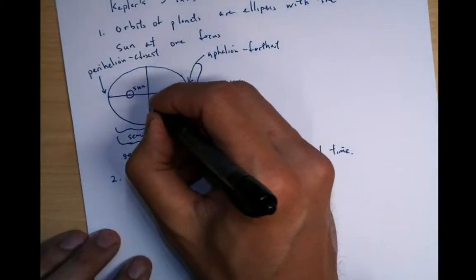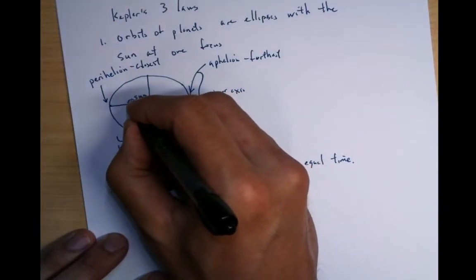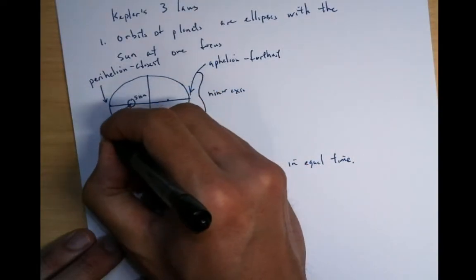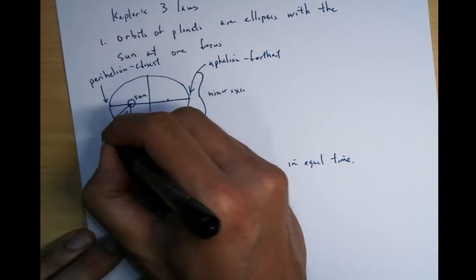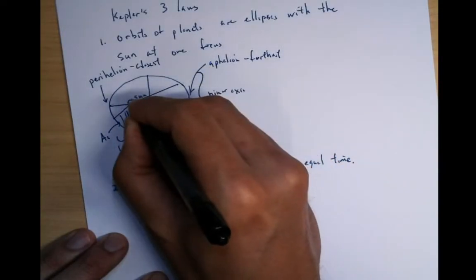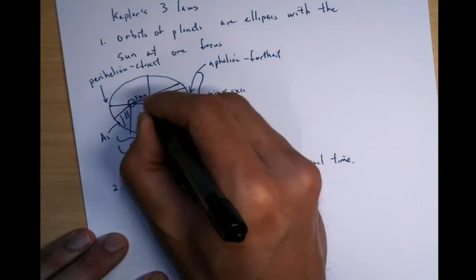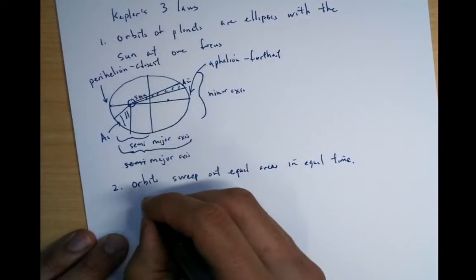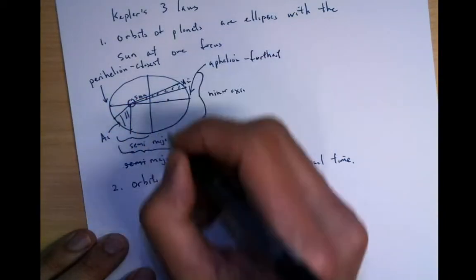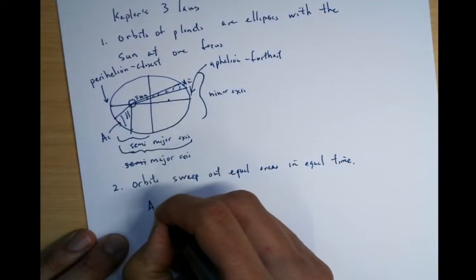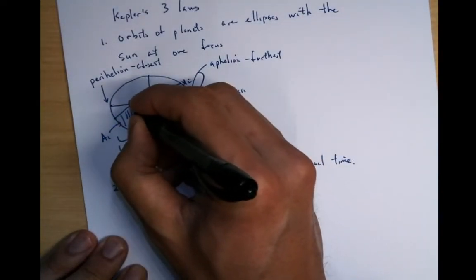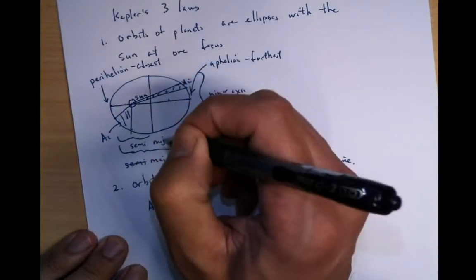So for instance, basically, if I want to look at something like this, then the area is from the sun's focus here. This is the area there, A1. This is another area here, A2. And so if the time to go from here to here is equal to the time to go here, then basically A1 is equal to A2. And what that means is that basically, as you get closer to the sun, you're moving faster and you get further away, you move slower.